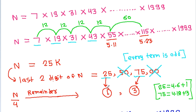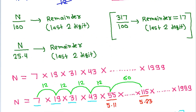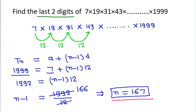The remainder is not equal to 1, so the last two digits cannot be 25. Therefore, the last two digits are 75.